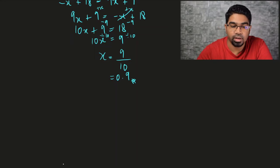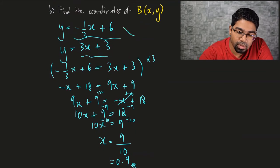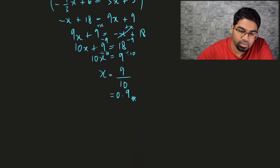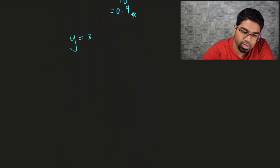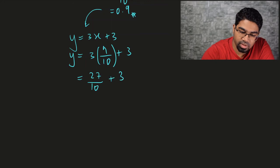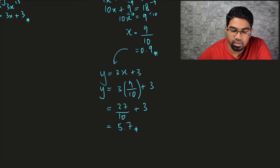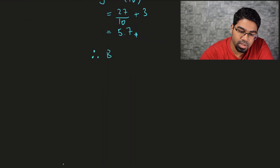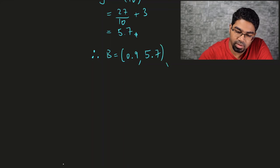Once we've solved for x, we find the y-coordinate by substituting into either equation. I'll use the second one since there's no fraction: y = 3x + 3. Substituting x = 9/10 gives y = 3 × (9/10) + 3 = 27/10 + 3 = 5.7. So we have found the x and y coordinates of point B. Therefore, B = (0.9, 5.7). This is the final answer.